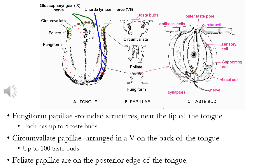The taste bud itself has an outer taste pore where the microvilli are found, and on the microvilli is where the tastant binds and causes reactions within the sensory cell. There are also supporting cells and basal cells at the base, with synapses at the bottom with the nerve. The fungiform papillae are rounded structures found near the tip of the tongue, circumvallate make a V on the back, whilst foliate papillae are on the posterior edge of the tongue.